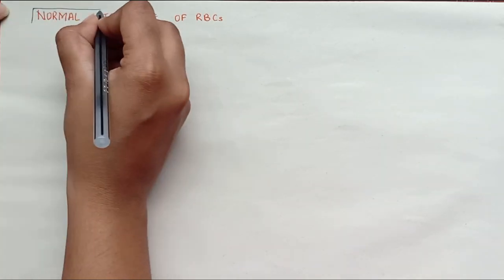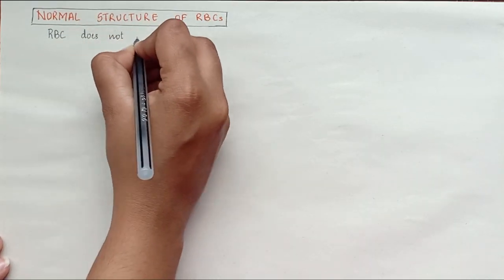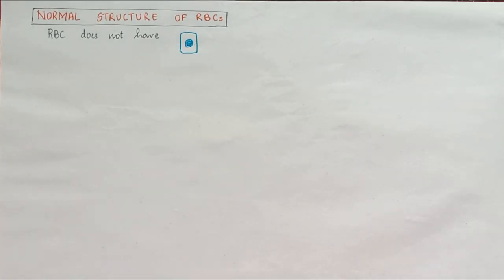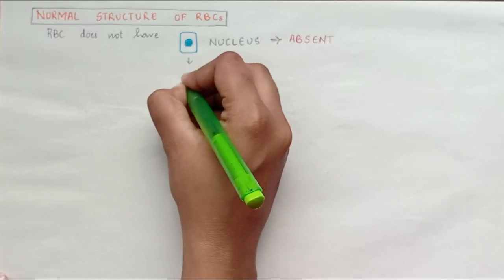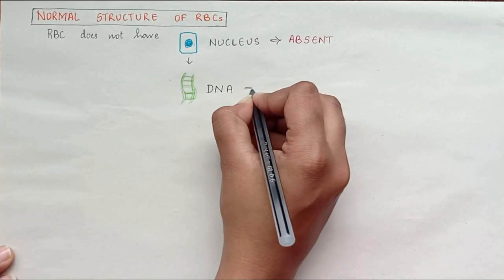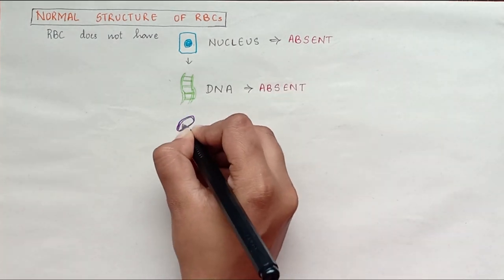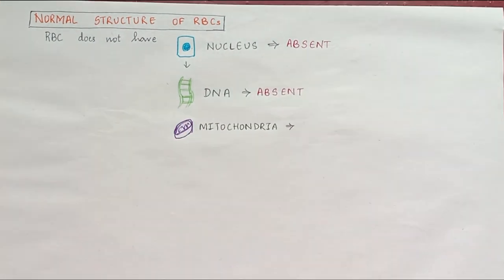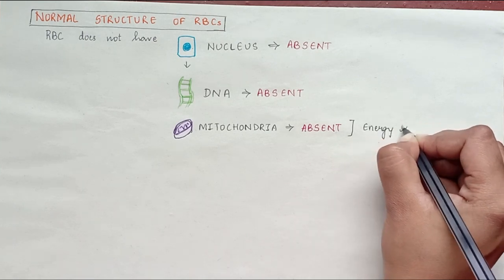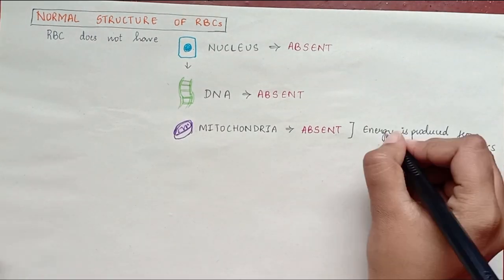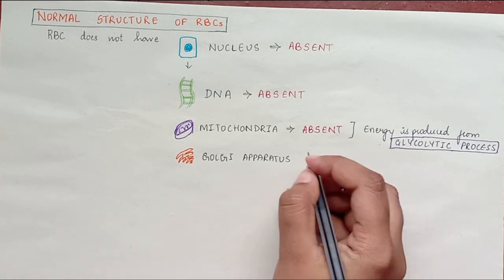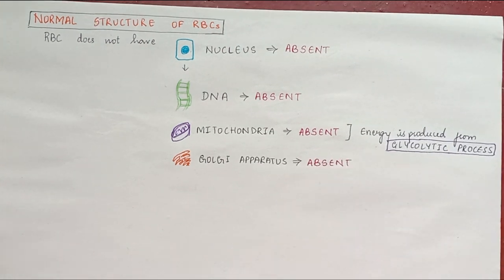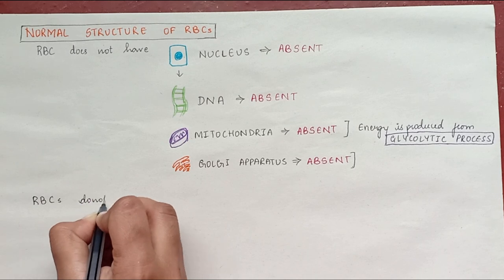Normal structure of red blood cells: The red blood cell is a non-nucleated formed element in the blood, so DNA is absent. Mitochondria are also absent and energy is produced from the glycolytic process. Golgi apparatus is also absent in RBCs. Red cells do not have insulin receptors, so glucose uptake by this cell is not controlled by insulin.